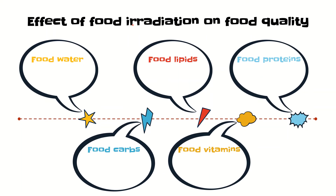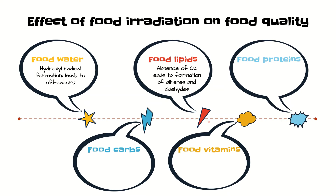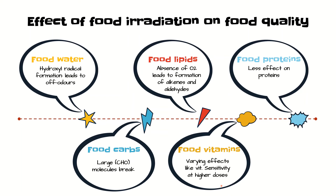The effects of food irradiation on food quality include: on water, hydroxyl radical formation leads to off-odors and off-flavors. With food lipids, in the absence of oxygen, it leads to formation of alkenes and aldehydes. With food proteins, there is less effect because proteins are not degraded easily. On carbohydrates, large CHO molecules break into smaller units like monosaccharides. For food vitamins, at higher doses vitamins are degraded, causing sensitivity in many vitamins.